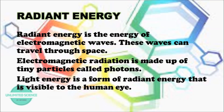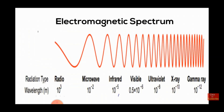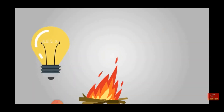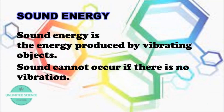Another form of energy is called radiant energy. Radiant energy is the energy of electromagnetic waves, and these waves can travel through space. Electromagnetic radiation is made up of tiny particles called photons. Light energy is a form of radiant energy that is visible — among the electromagnetic spectrum, it is only light that is visible, which is why we can see different colors. Examples include light bulbs, fire, and lamps.